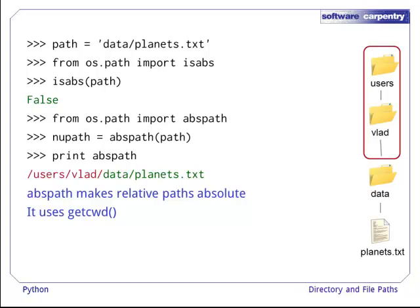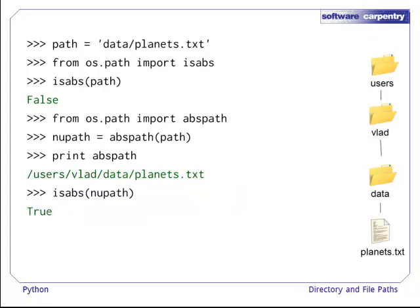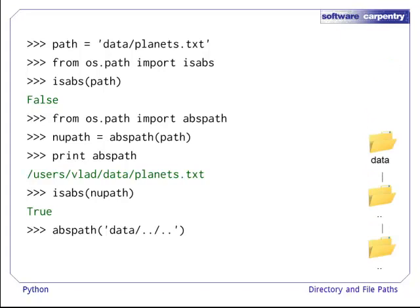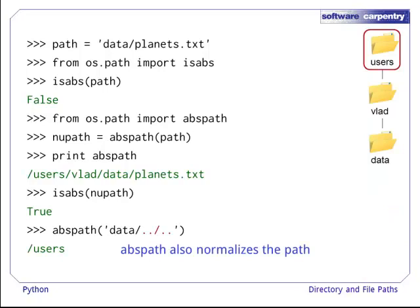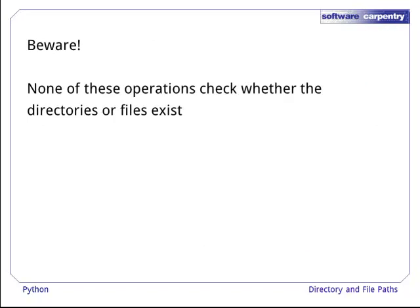Abspath just adds the current working directory to the front of the path, then normalises the path in a similar way to normpath. And here is another example with more normalisation needed. This sets the absolute path to be users, vlad, data, dot dot, dot dot, but then normalises the dot dot parent directory shorthand to get to users. It is important to remember that none of these operations check whether the directories or files in the path actually exist. They are useful though, as they allow you to build paths for directories or files you will create later. But it also means you need to do these checks yourself, so remember the OSPath exists function.